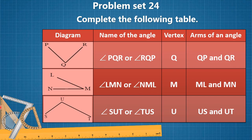The next angle is angle LMN or angle NML. The common end point is M, so the vertex is M and MN and ML are the arms of this angle. The next angle is angle SUT or it can also be named as angle TUS. U is the common end point, so the vertex is U and US and UT are the arms of this angle.